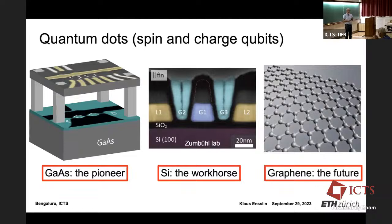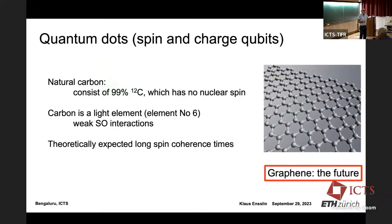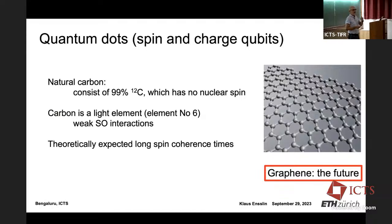Graphene is the future. Natural carbon consists to 99% of carbon-12, so without doing anything you are already 99% nuclear spin-free. Carbon is element number six in the periodic table — almost the lightest element with which you can build something in solid-state physics — and the strength of spin-orbit interaction increases with atomic size. So theoretically one expects long spin coherence times, because these major decoherence mechanisms are expected to be weak. The road to measure spin coherence times is a long one, but we're getting there.